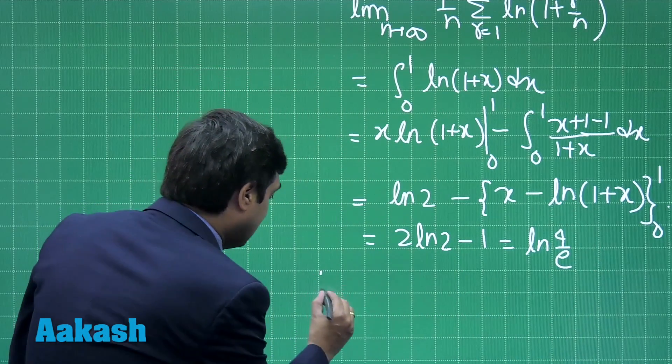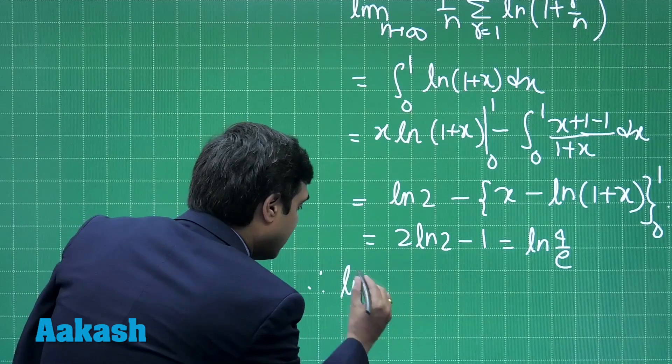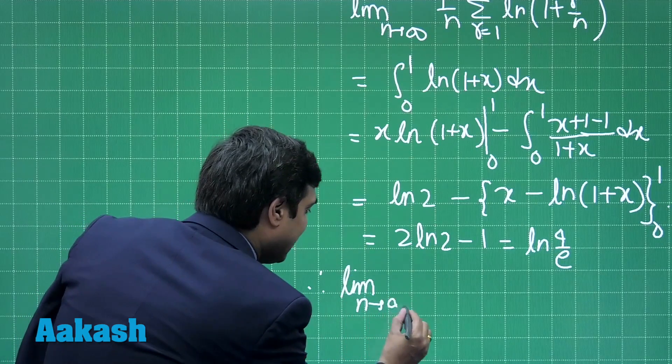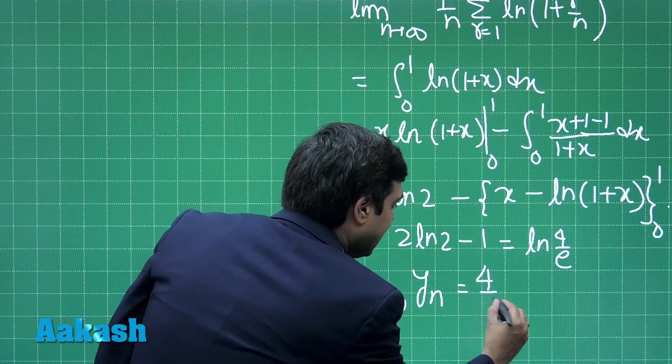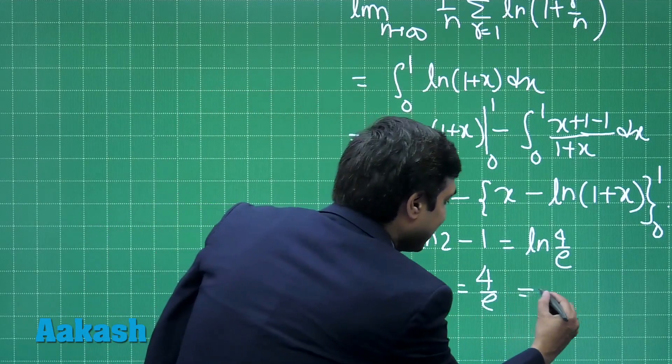Here we observe that limit n approaching infinity y_n comes as 4 by e, which is given to us as L.